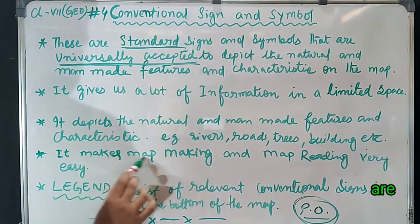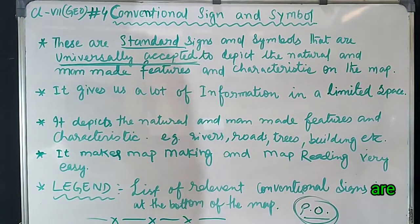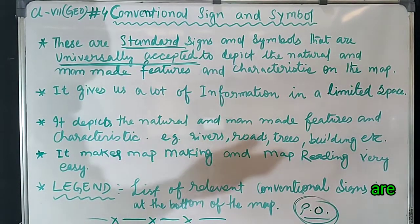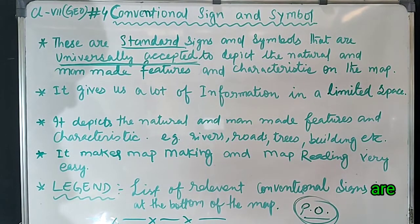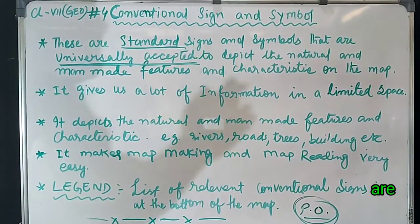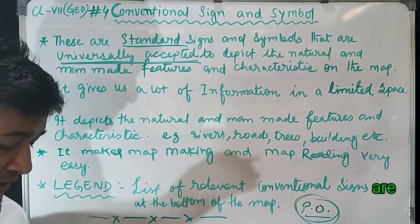Conventional signs make map making and map reading very easy because a map has limited space in which the actual shape and size of features cannot be drawn. Even if we draw them, the map becomes congested and crowded, making both map making and map reading tough. That is why conventional signs are used.